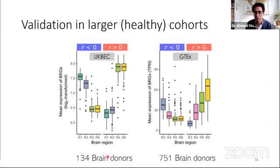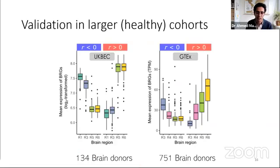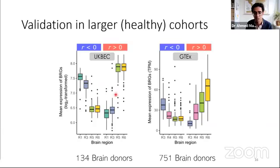Of course, this data is limited to six donors, so we asked whether this pattern is general. We looked at two larger datasets — GTEx and the UK Brain Expression data — including many more donors: 134 and 751 respectively. We plotted the expression of those 900 detected genes, split by negatively and positively correlated. Although these larger datasets don't cover all regions — only subsets like R1, R3, R5, R6 — we do see the same pattern. So we're quite confident about the patterns we detect for these genes.